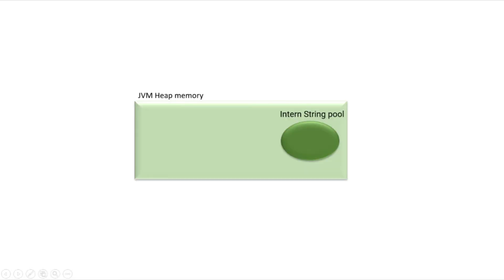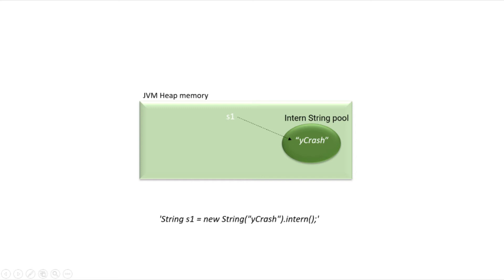This is how the JVM memory looks initially. There is the JVM heap memory, which has the young generation and old generation. This internally contains a pool called the string intern pool. So as a developer, when I write this code — string s1 equals new String 'ycrash' and intern — the JVM first checks whether this 'ycrash' string is present in this intern pool.